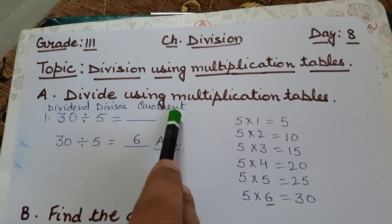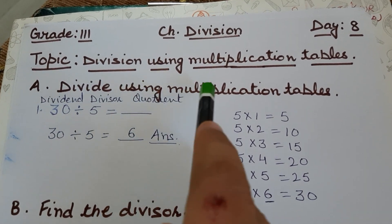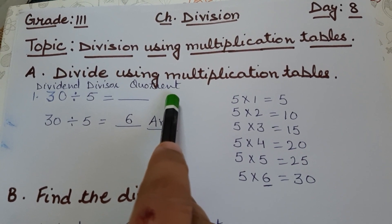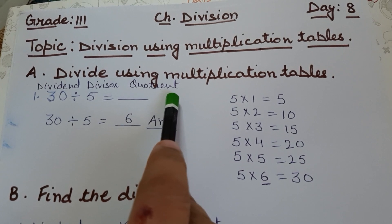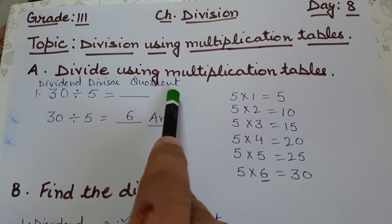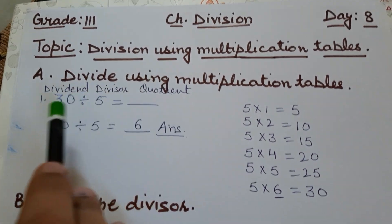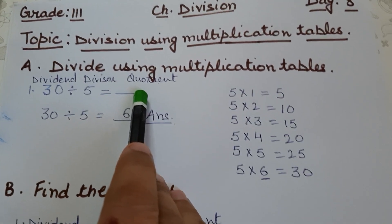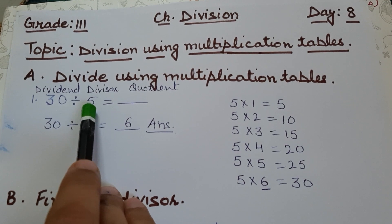So basically in this sum we are supposed to find the quotient. We will find the quotient by using multiplication tables. For this chapter, you should know your tables, so please do written practice of tables daily. Take any five tables and write those tables twice a day. You can copy the table — don't just cram them. The sum is 30 divided by 5, so we will write the divisor's table.